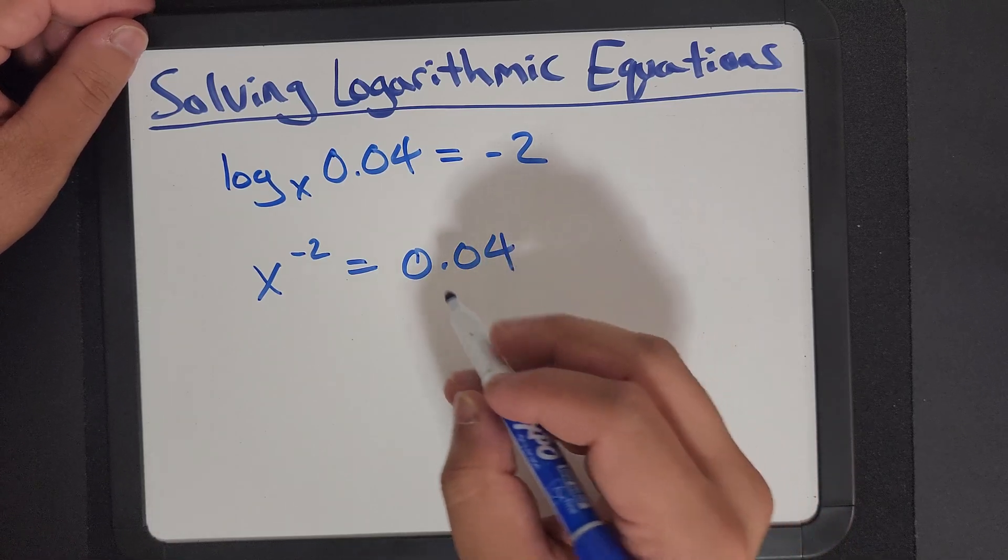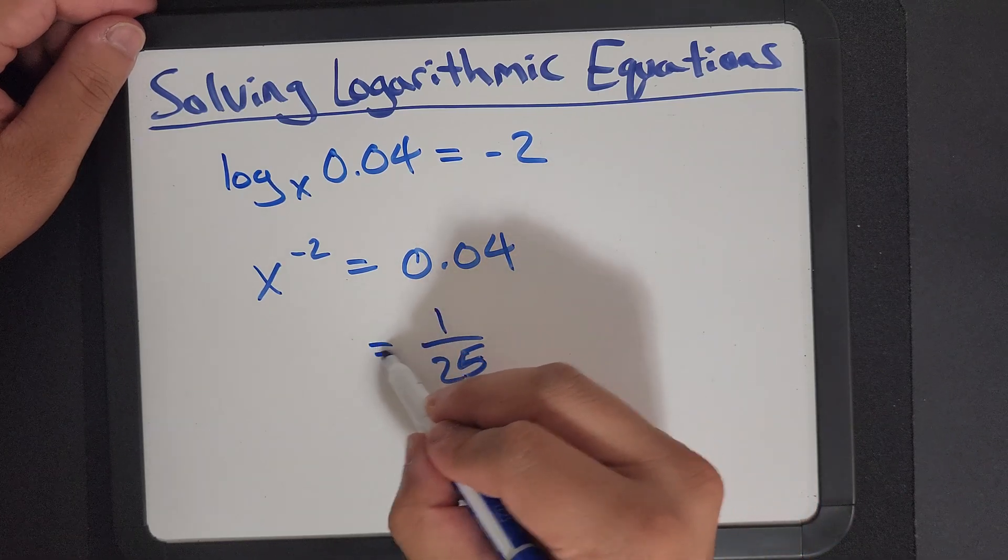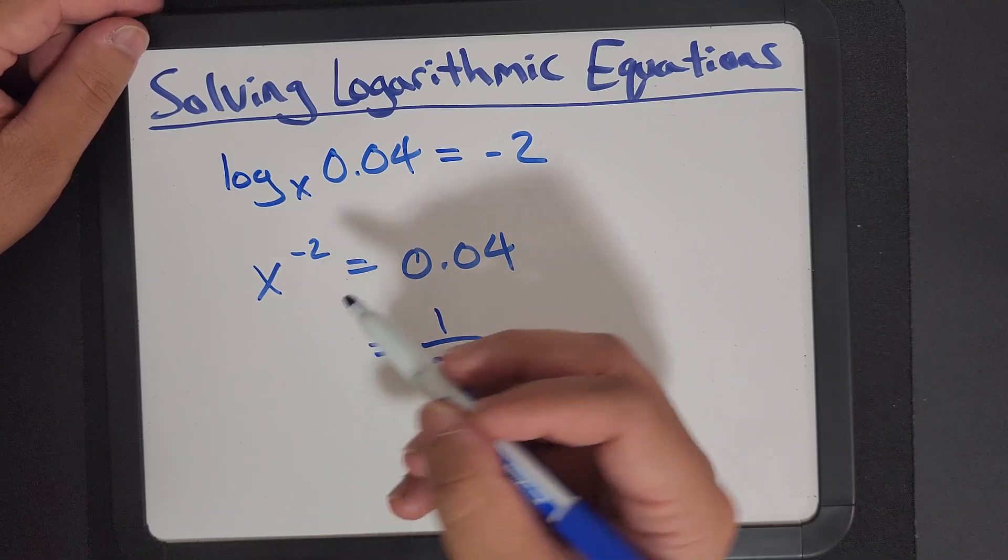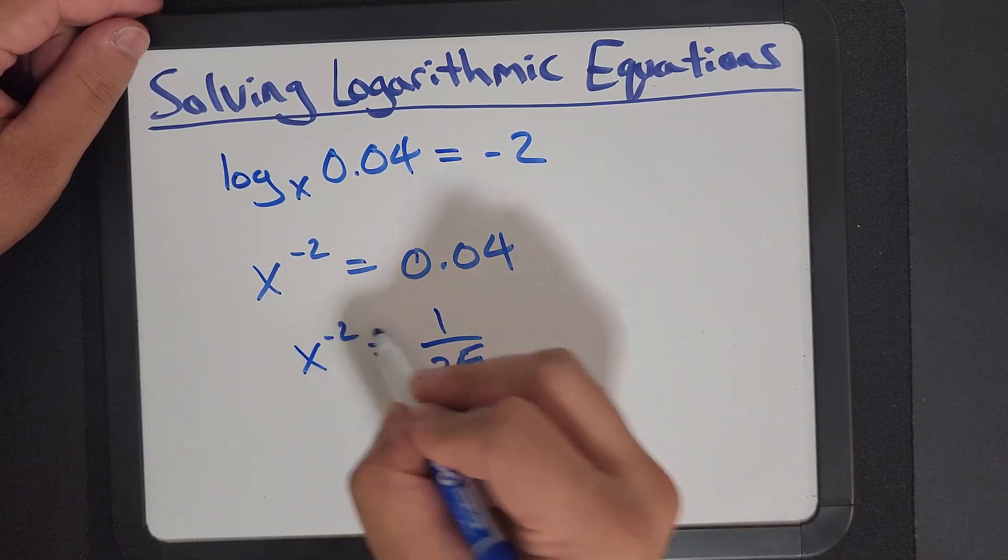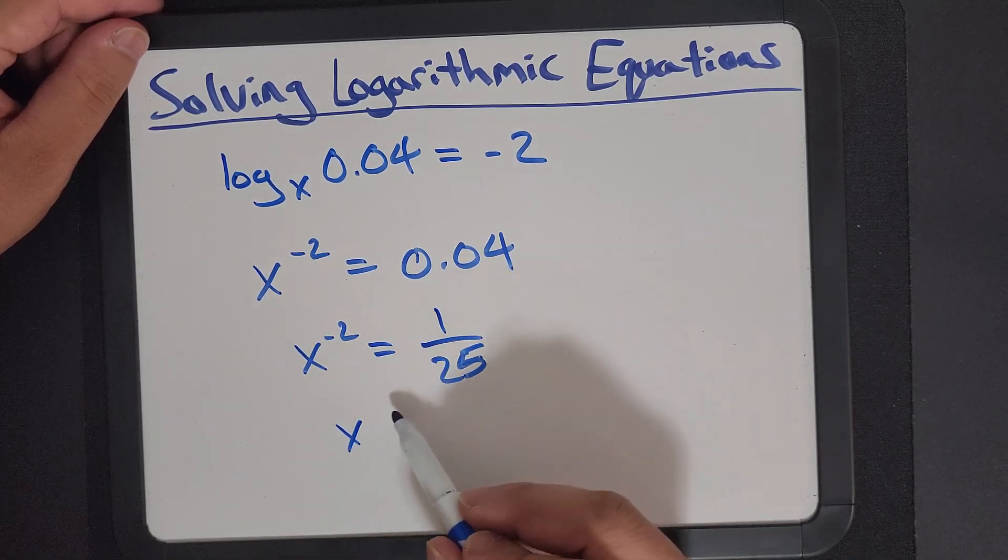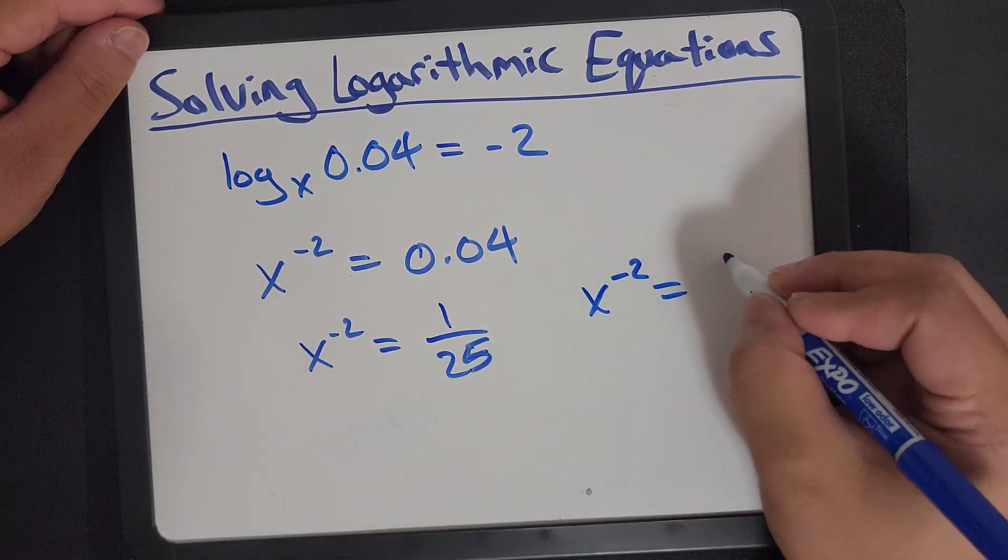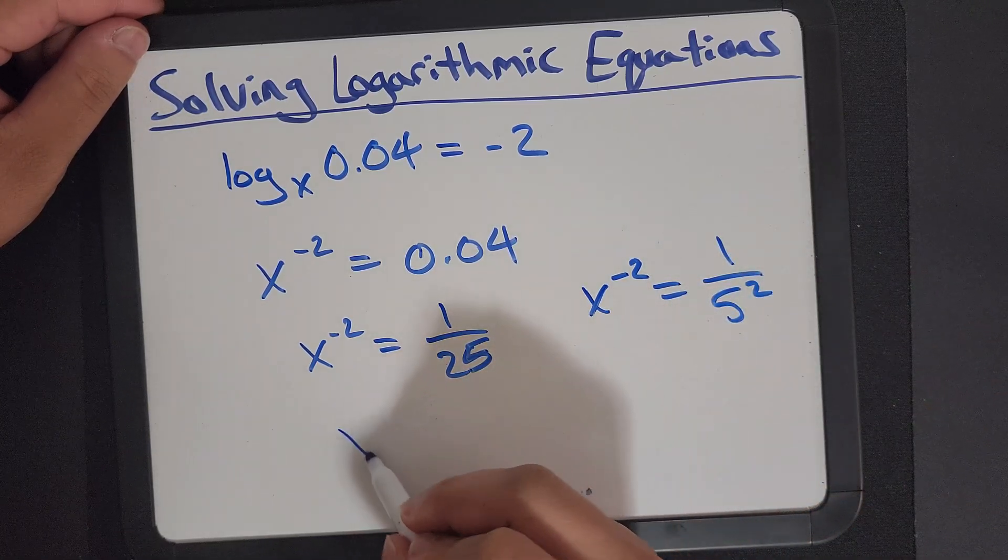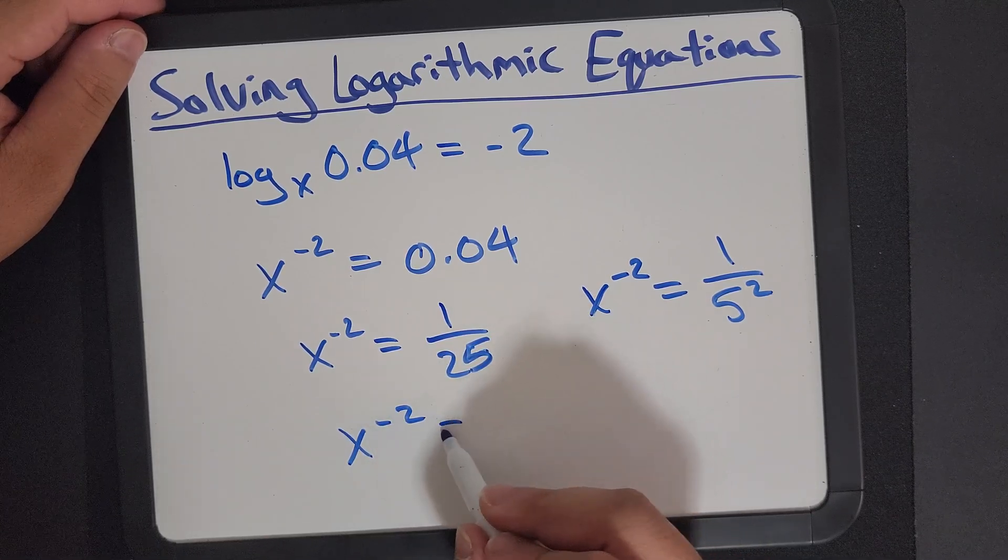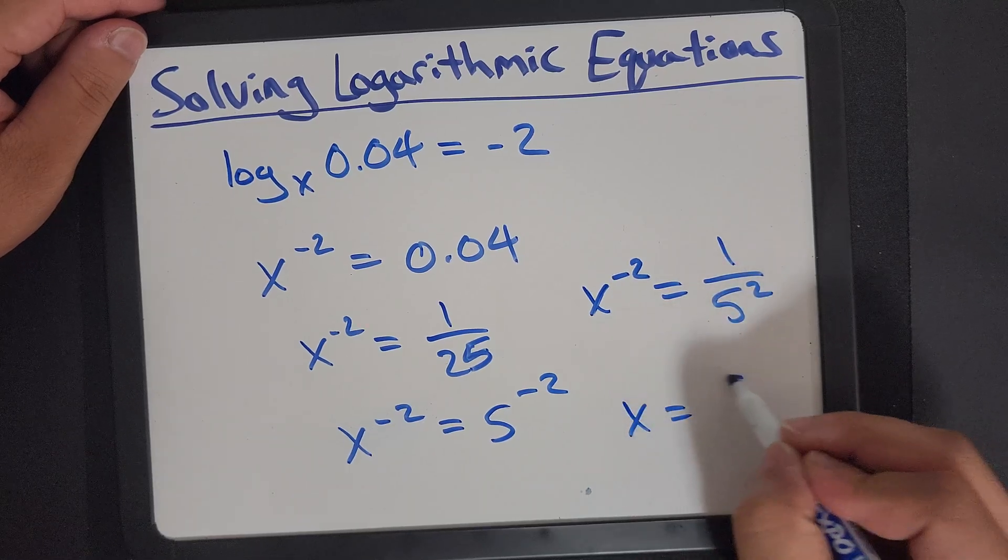One thing to identify here is that 0.04 is actually 1 over 25. So let's start writing this in a similar way. I know that x to the negative 2 is also equal to 1 over 5 squared, which is also x to the negative 2, which is also equal to 5 to the negative 2, which means x equals 5.